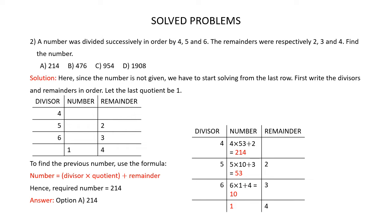Now to get the previous number, multiply 5 by 10 and then add 3: 5 × 10 + 3 = 53. To get the next previous number, multiply 4 by 53 and add 2: 4 × 53 + 2 = 214. So 214 is the required number. The correct answer is option A, 214.